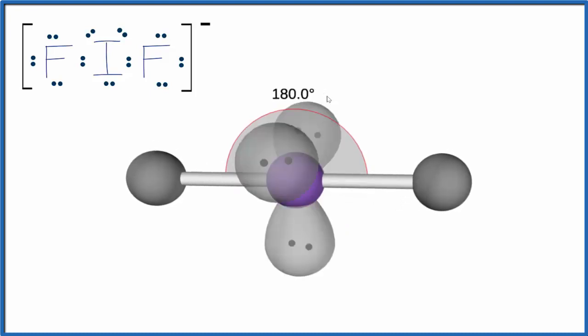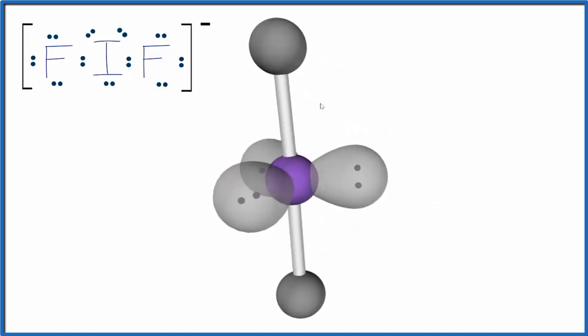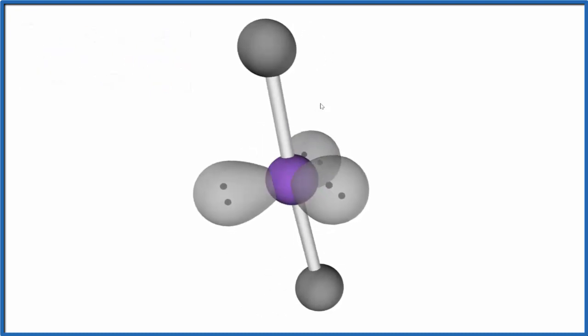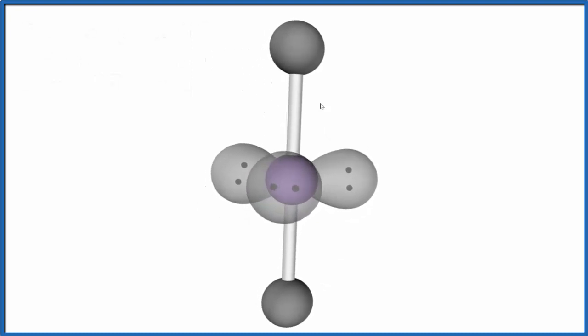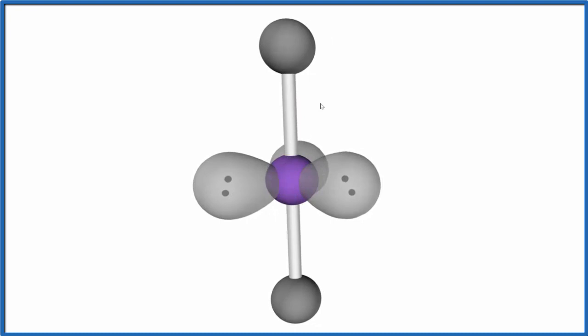Let's put the lone pairs back, and let's look at the electron geometry. So the electron geometry, we're looking at the geometry for all of these electron groups. We have the two atoms, and then the one, two, three lone pairs. We end up with what's called a trigonal bipyramidal electron geometry.